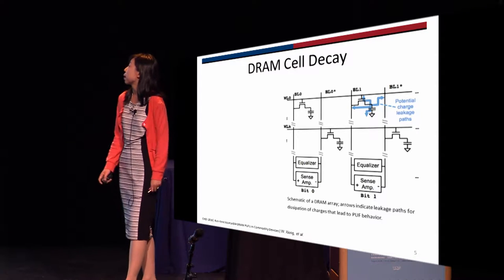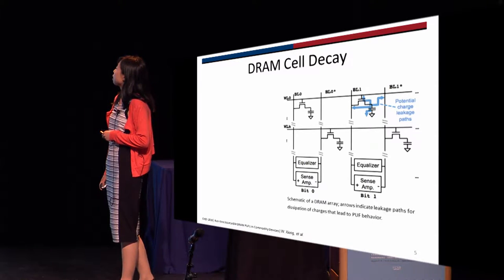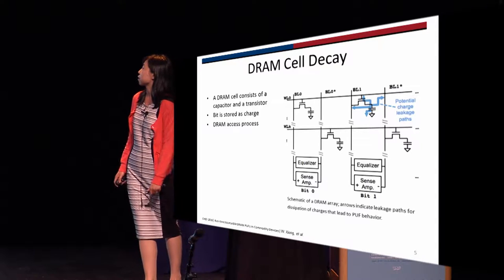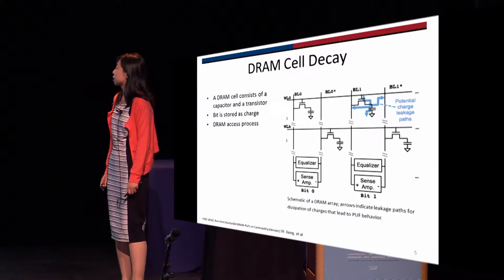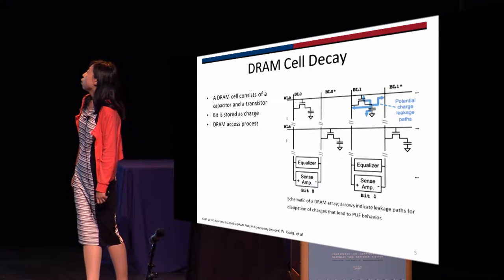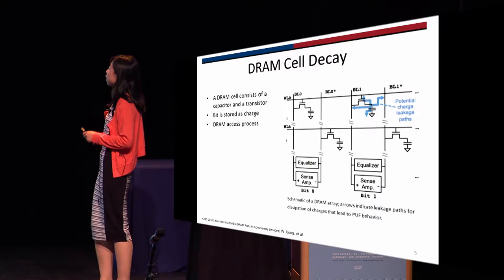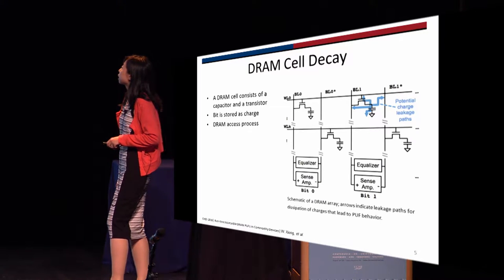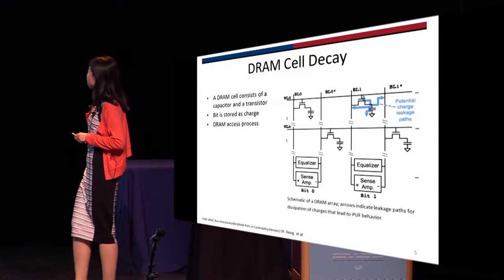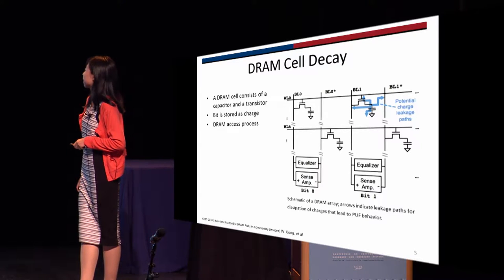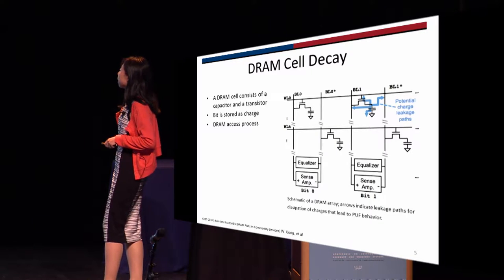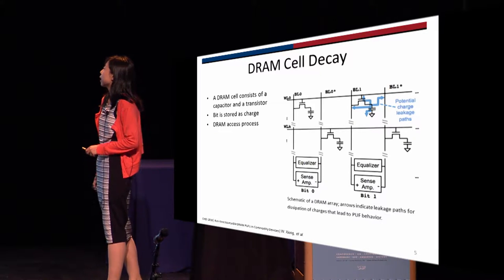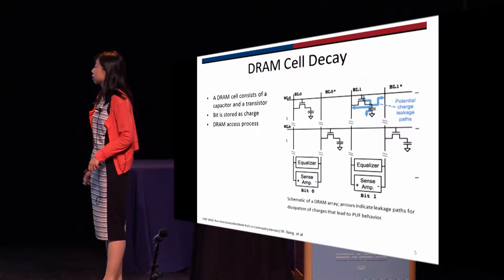This is a DRAM array. The DRAM cells are organized in rows and columns. Each DRAM cell consists of a capacitor and a transistor, and bits are stored as charge on the capacitor. When we want to access DRAM cells, the corresponding word line given by the address is first enabled and the transistor conducts. Then the charge on the capacitor can go to the vertical bit line, and the sense amplifier can amplify the signal on the bit line, and recharge the capacitor, read out the data, or write the data back to the capacitor.